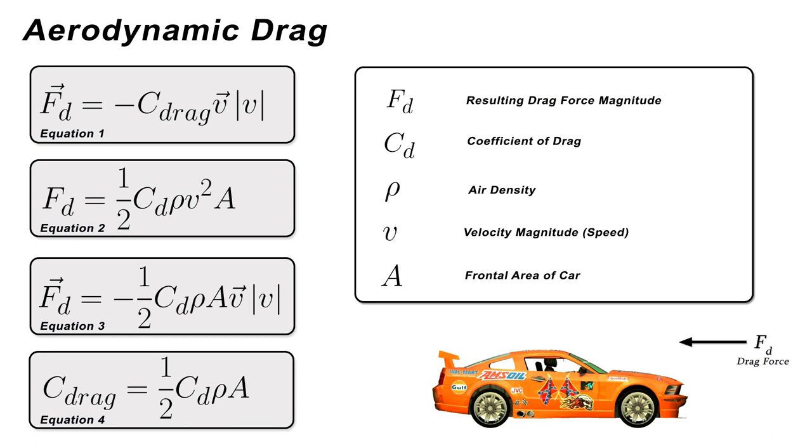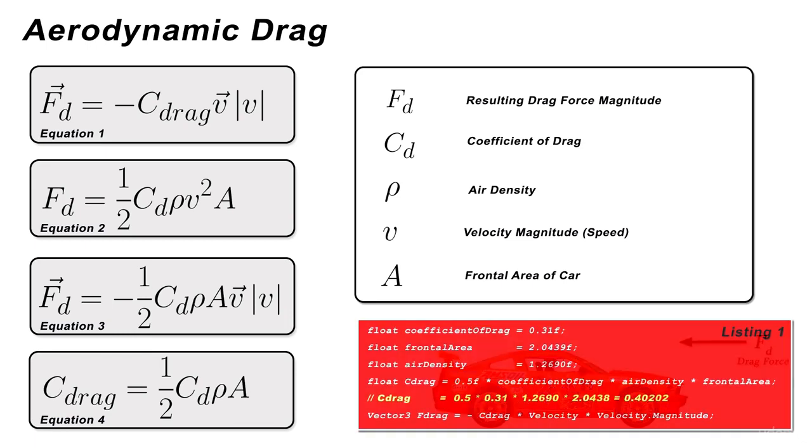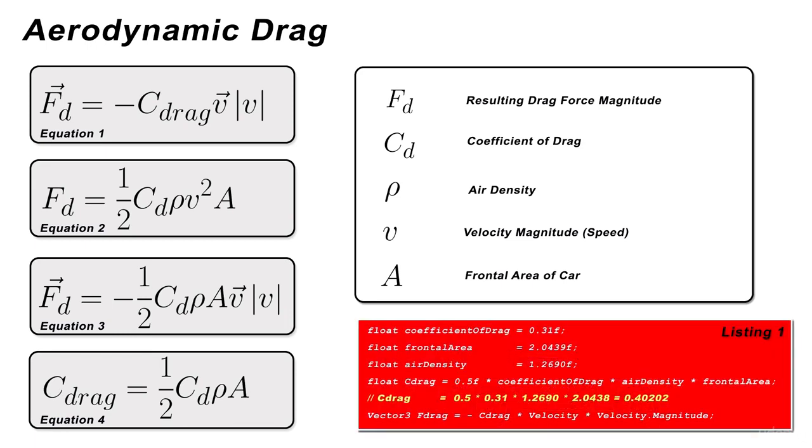To give you an example, a quick search on the net informed me that my Ford Mondeo has a drag coefficient of 0.31, a frontal area of 2.0439 meters squared, and I will assume a temperature of 5 degrees Celsius.